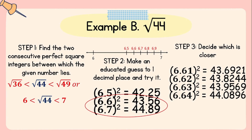Step number three: decide which is closer. Since 44 is closer to 43.56 compared to 44.89, we will now use 6.6 for further estimation to the hundredths place by squaring 6.61, 6.62, 6.63, and 6.64. Notice that 44 is closer to 43.9569 compared to 44.0896. Since 43.9569 is the square of 6.63, the square root of 44 is 6.63 when estimated to the nearest hundredths.